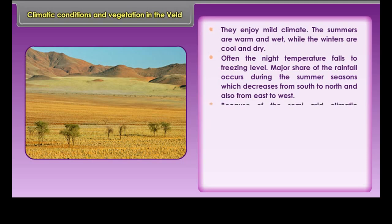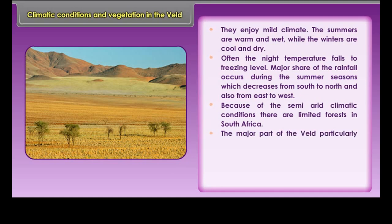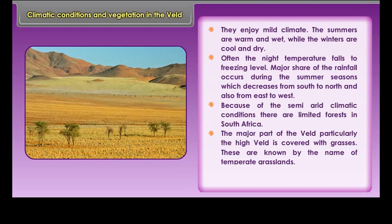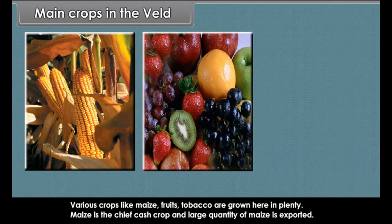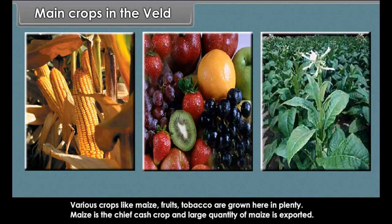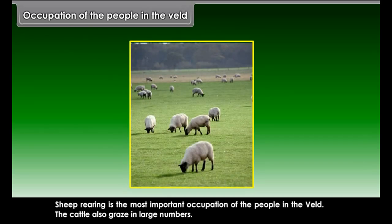Climatic Conditions and Vegetation in the Veld: The Veld enjoys a mild climate. Summers are warm and wet, while winters are cool and dry. Often the night temperature falls to freezing level. The major share of rainfall occurs during summer, decreasing from south to north and from east to west. Because of semi-arid climatic conditions, there are limited forests. The high Veld is covered with grasses — a broad, level stretch of both tall and short grasses and bushes.